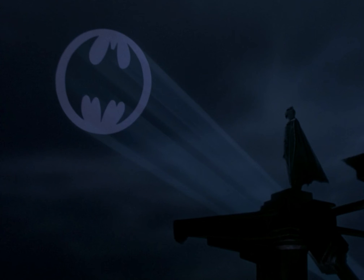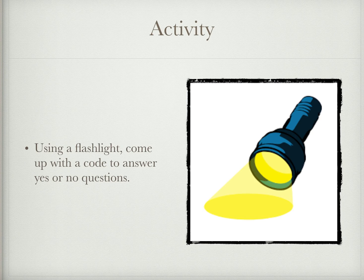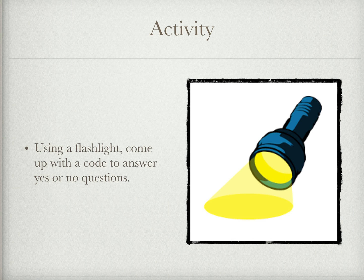It might seem like a challenge at first, but as I just showed you, it actually happens all the time. So for today's activity, I'm going to challenge you: if you have a flashlight at home, come up with a code using only your flashlight to answer yes or no questions. Take your flashlight out, decide which light signals mean yes and which mean no, then explain the code to someone else in your household and have them ask you questions. You should respond to them using only light.